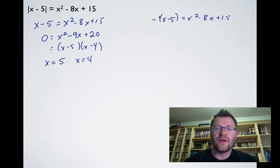For the second equation, remember to distribute the negative to both terms: -x + 5 = x² - 8x + 15. Moving everything to one side: 0 = x² - 7x + 10.